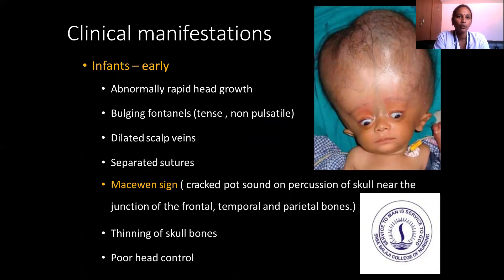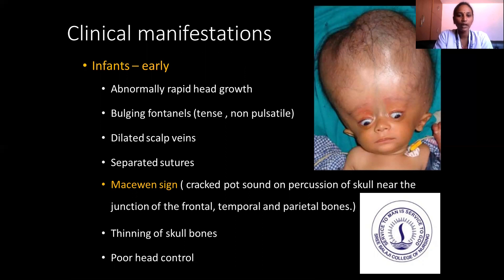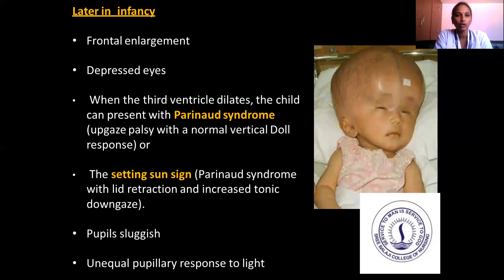Clinical manifestations: in infants, abnormal rapid head growth, bulging fontanelle that is tense and non-pulsatile, dilated scalp veins, separated sutures, and Macewen's sign — a cracked-pot sound on percussion of the skull near the junction of the frontal, temporal, and parietal bones. There is also thinning of the skull bones. Later in infancy: frontal enlargement, depressed brow. When the third ventricle dilates, the child may present with Parinaud syndrome — the setting sun sign — with upgazed pupils and a normal vertical doll response.